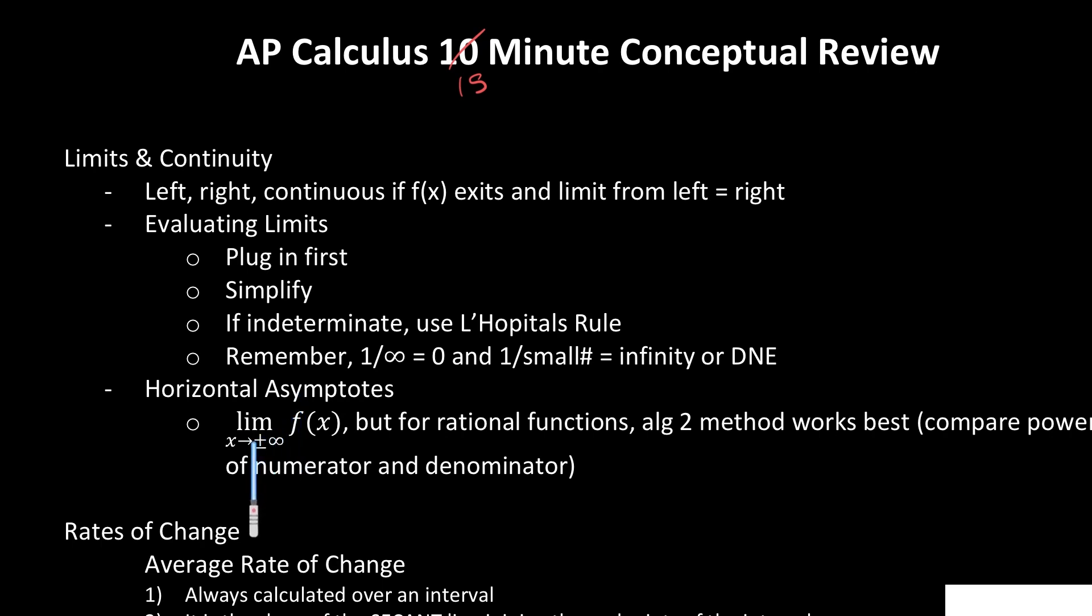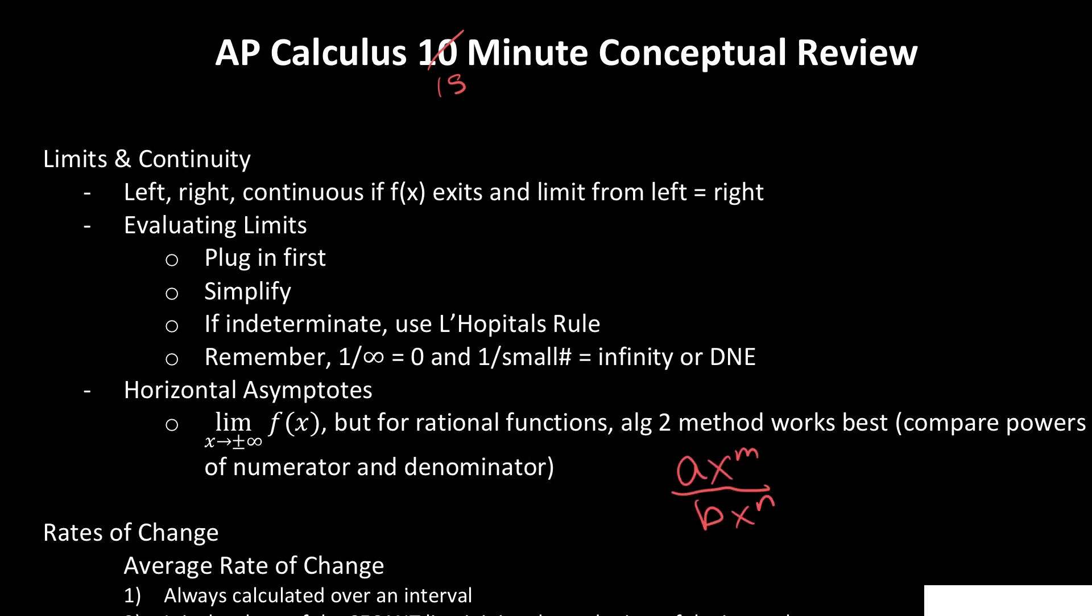If you get one over a very small number, then that's going to be infinity or it does not exist. Horizontal asymptotes, make sure you know how to find them. You are actually taking the limit as x goes to plus and minus infinity of f(x). But for rational functions, there is a shortcut. I suggest using the Algebra 2 method, which is to compare the highest powers of the numerator and the denominator. If m and n, these highest powers, match, then a over b is your horizontal asymptote, y equals a over b. If m is greater, then you won't have the horizontal asymptote. And if n is a bigger value than m, the bottom will be much bigger, it'll go to zero, so you will have a horizontal asymptote at y equals zero.